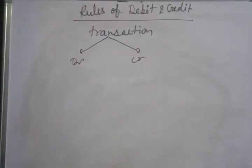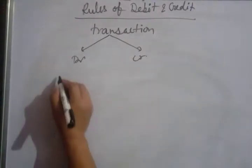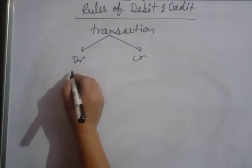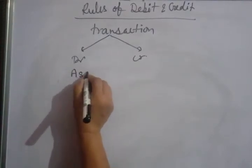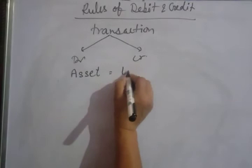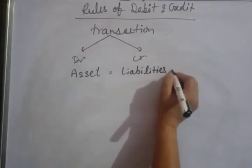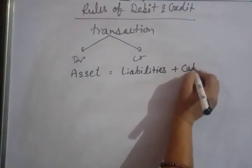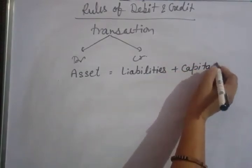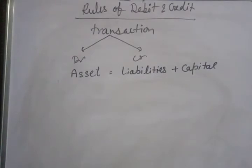We will go through the American approach. Our accountancy has 5 things. The accounting equation is: Assets equals Liability plus Capital. These three things will be there. What will our transactions be? Assets can be fixed, or liabilities can be fixed, or capital. There are two other things as well.